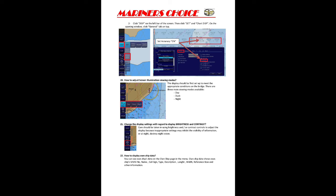How to adjust your screen: press on the illumination bar and you will be able to see Day, Dusk, and Night modes. On each mode there are also different color patterns you can select. You can also change the display setting with respect to brightness and contrast.